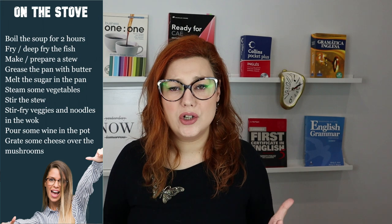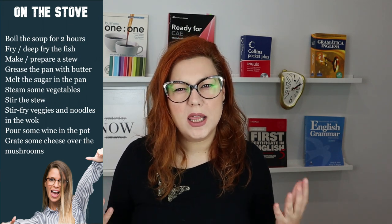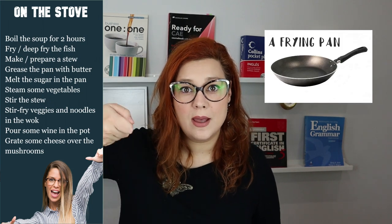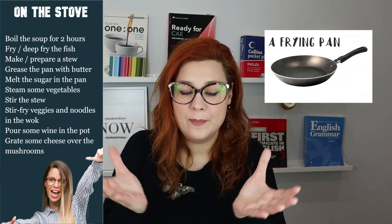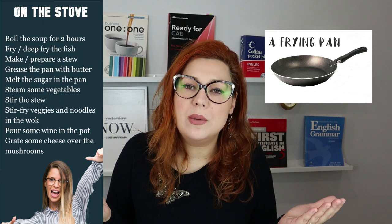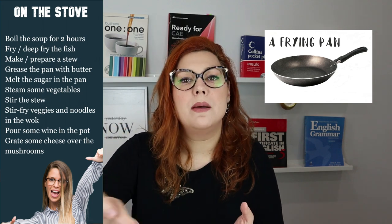You can also prepare a stew on the stove. A stew is a typical food we prepare in winter — it's like a thick soup with potatoes and meat, but it's thicker than a soup, not as liquid. If we want to prepare a steak, we grease the pan first. The pan is normally where we prepare pancakes or anything we want to fry. The first thing we normally do is grease the pan, adding some butter or olive oil or sunflower oil before adding the meat.